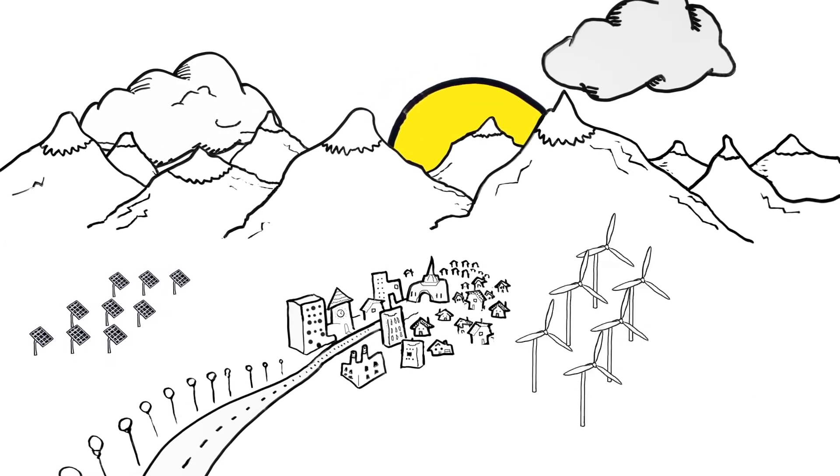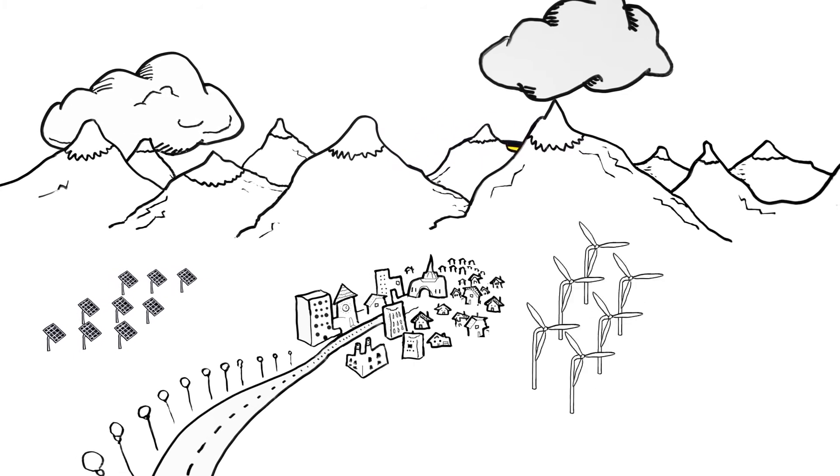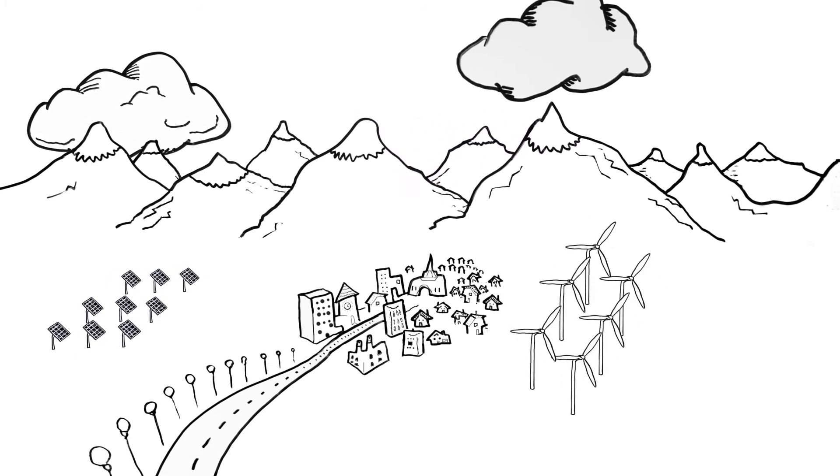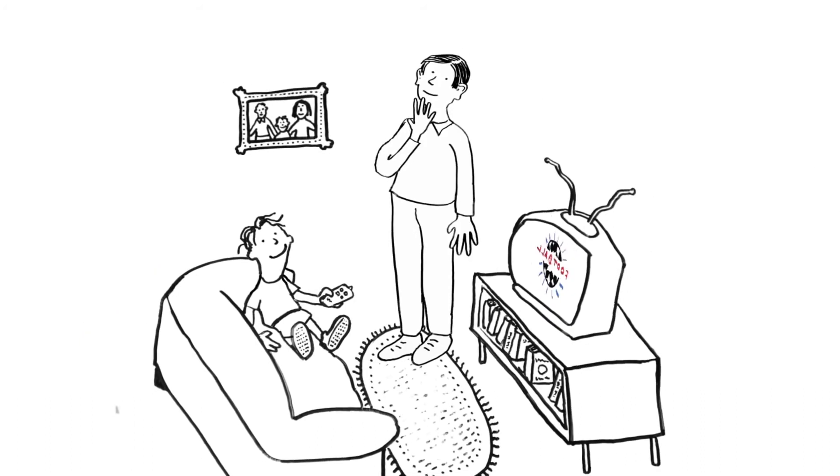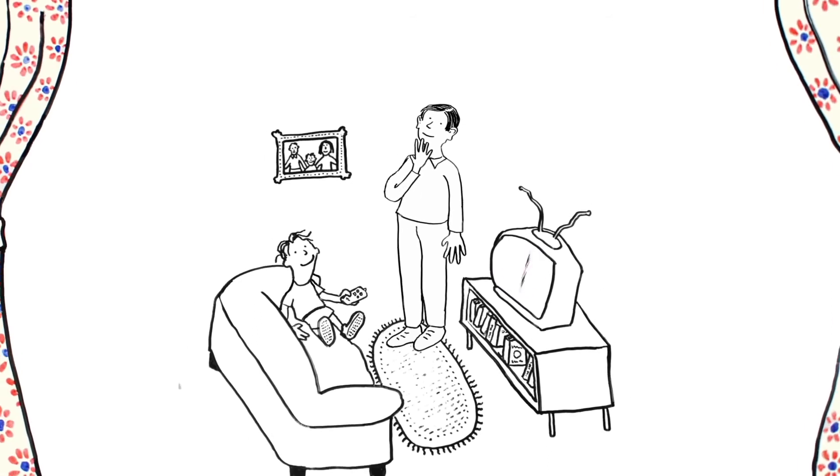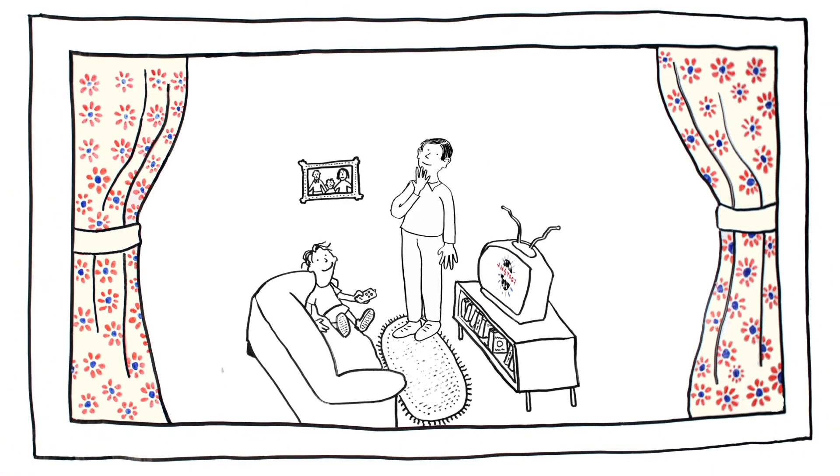This means cleaner air for you, me, and all our neighbors. But most importantly, he explained, the shops and houses of Rosenheim will have light and warmth, and when you want to watch the match, you can turn on the TV. Cool, said Alex, and he went back to watching his football match. Yes, yes it is, thought his father.